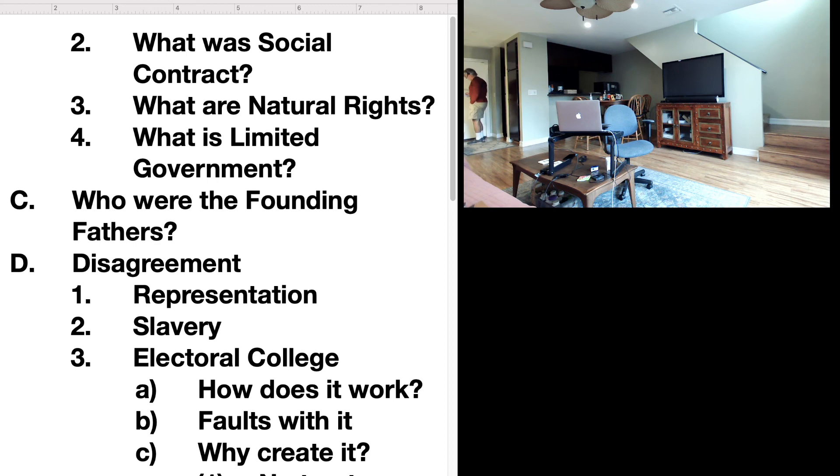They believed in a strong central government that can put down rebellions and protect property owners from non-property owners. And finally, they did not trust the masses. Here's what some of these conventioneers referred to the masses as: One of the people at the convention referred to them as reptiles.